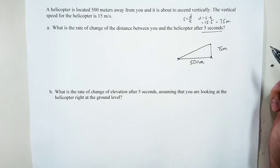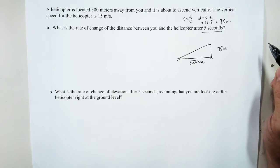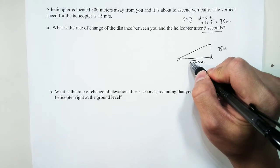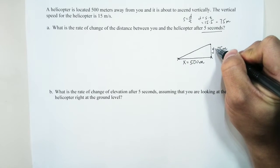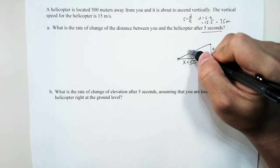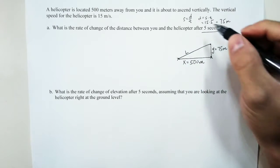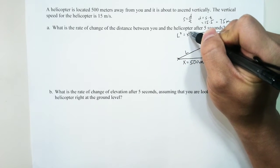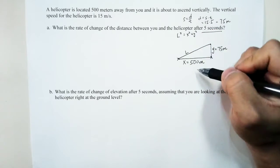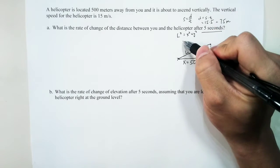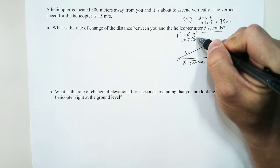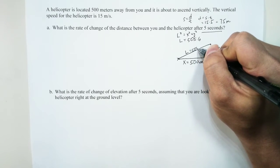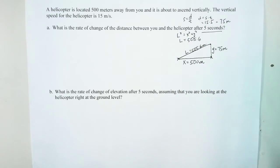Let's label the diagram more specifically. The horizontal distance is x, the vertical distance is y, and the hypotenuse is l. So l² = x² + y². Plugging in the numbers, l equals 505.6 meters.